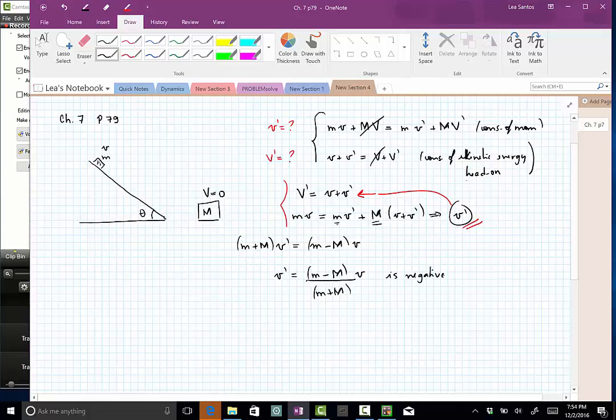And from this equation, you have all the numbers, you will find a number for the speed, and you will also find a number for the speed of the big object.